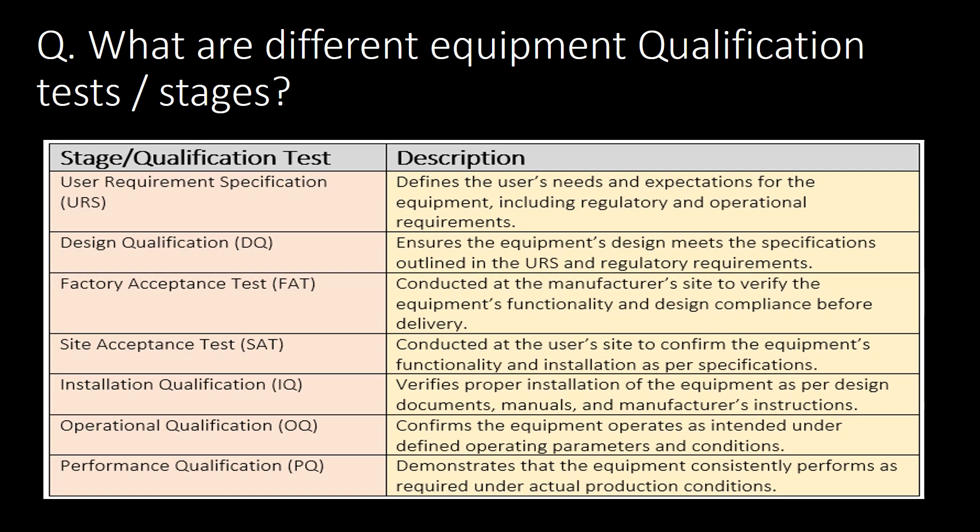What are the different equipment qualification tests or stages? There are 7 important equipment qualification stages: first, URS - User Requirement Specification; second, DQ - Design Qualification; third, FAT - Factory Acceptance Test; fourth, SAT - Site Acceptance Test; fifth, IQ - Installation Qualification; sixth, OQ - Operational Qualification; and seventh, PQ - Performance Qualification.